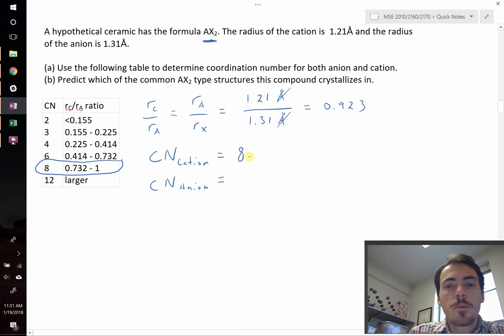For example, if the coordination number of our cation is 8, but there's twice as many anions as there are cations, then each cation needs to be surrounded by twice as many ions as the anions. So if the cation is surrounded by 8, then the anion can only be surrounded by 4. So it's going to have a coordination number of 4.